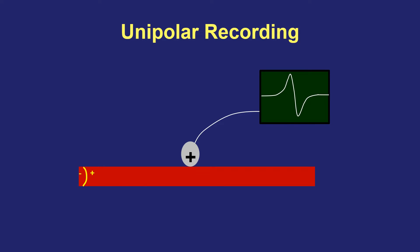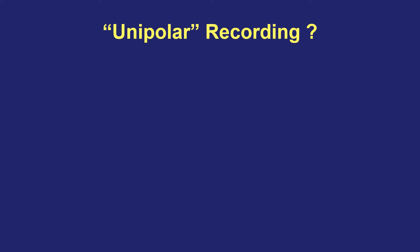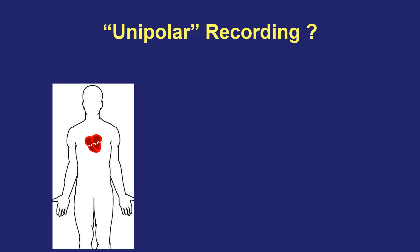Let's start by discussing unipolar recordings in the heart. You might be asking yourself: we just discussed having an anode and a cathode in the recording circuit, so what do we mean by unipolar recording where there's only one electrode? When we say unipolar recording in the heart, we're talking about having only one electrode in the heart itself—usually the anode—and the cathode is somewhere remote, not located in the heart.